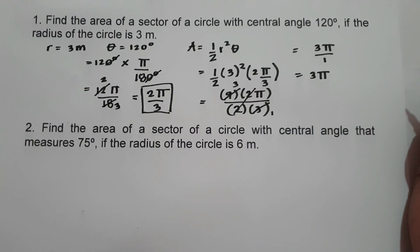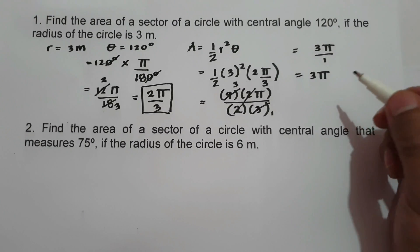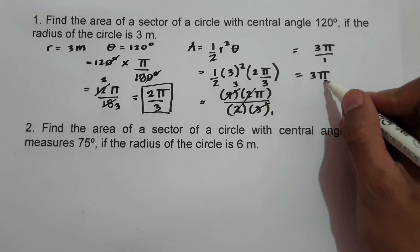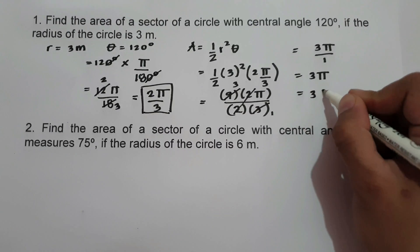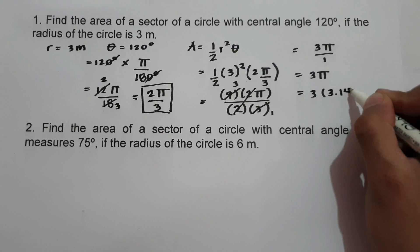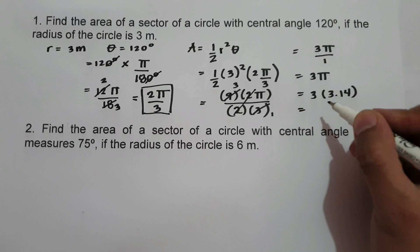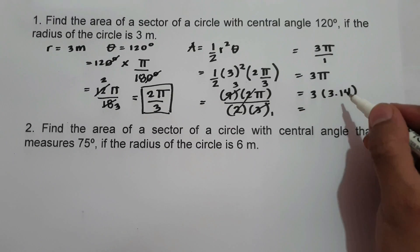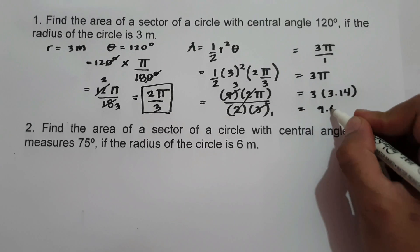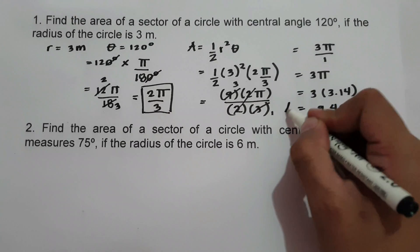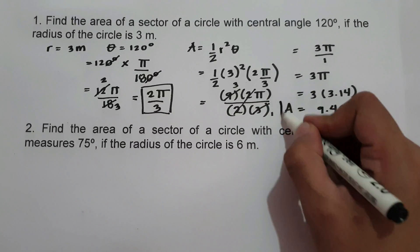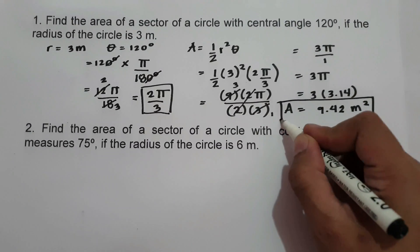If you want the exact decimal value of the area of the sector, substitute pi equals 3.14. So we have 3 times 3.14, which equals 9.42 meter square. This is the area of our sector.